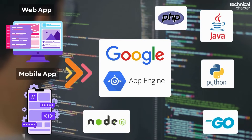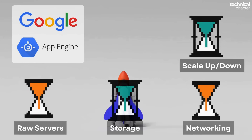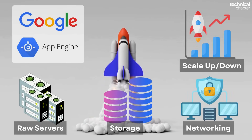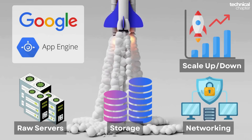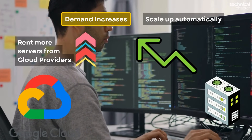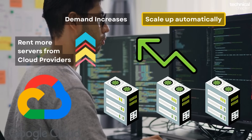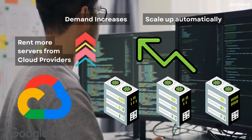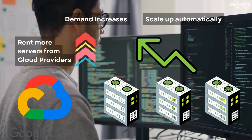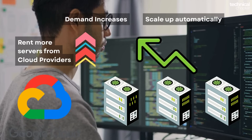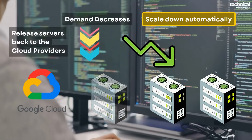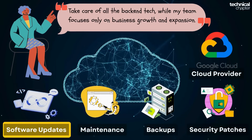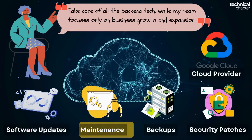App Engine will create the infrastructure required for your app in a couple of minutes. Google automatically provides the servers, storage, networking, and scaling. If suddenly 10,000 people start using your app, Google App Engine will scale it up automatically without you touching a thing. As a developer, when you use Google App Engine, you only pay for what you actually use — so if your website has low traffic, your cost stays low, but if your traffic grows, you pay a bit more. Google takes care of all the back-end heavy lifting so you can stay focused on building and improving your web app.